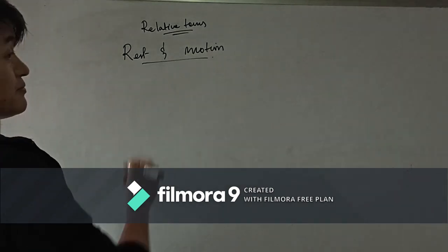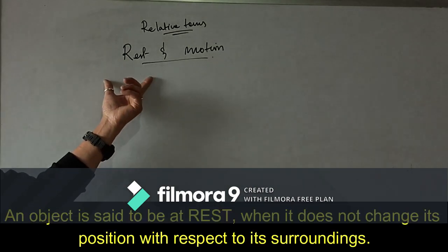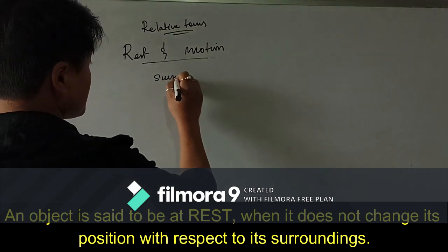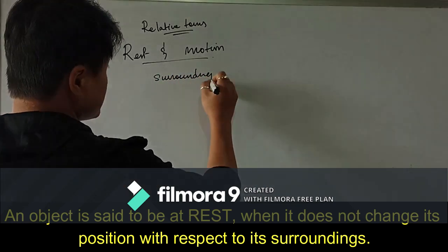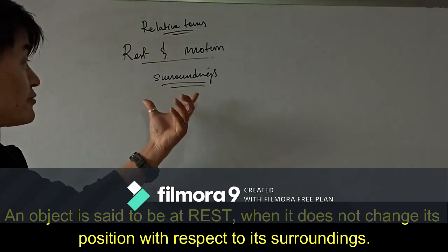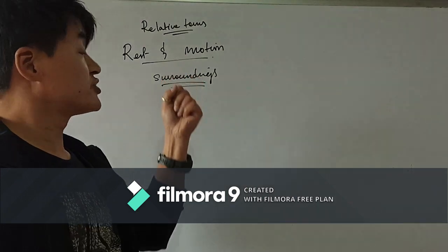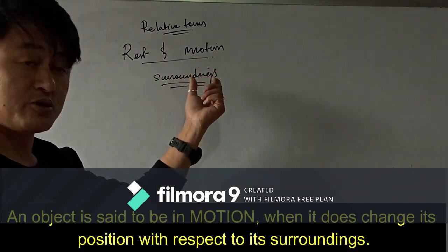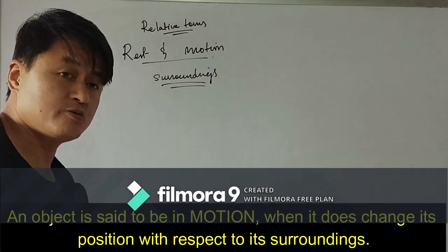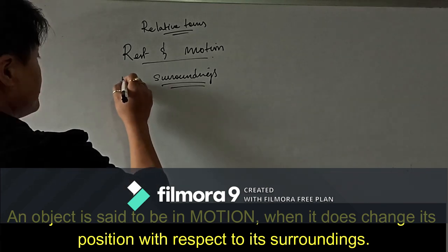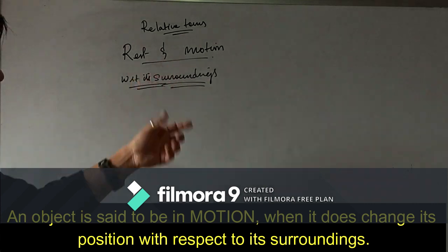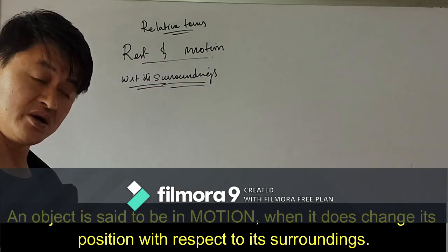An object is said to be at rest when it does not change its position with respect to its surroundings. An object is said to be in motion when it does change its position with respect to its surroundings. We have to compare and relate objects with each other to define rest and motion.